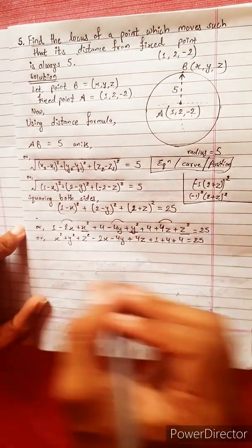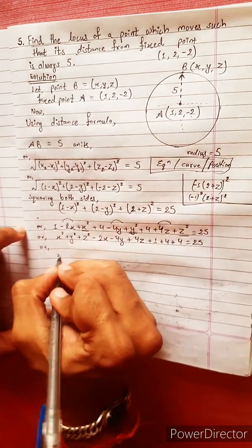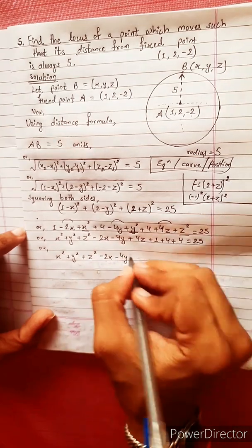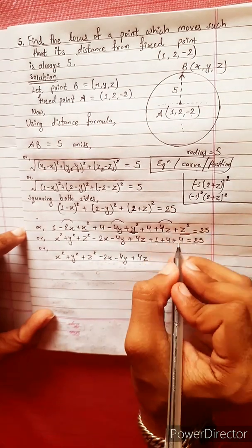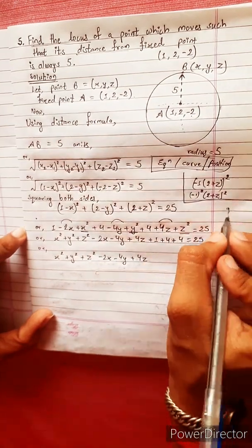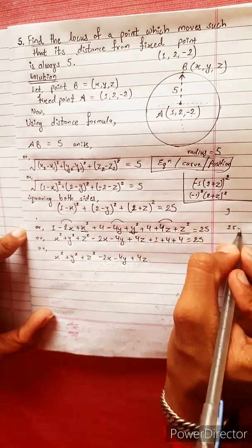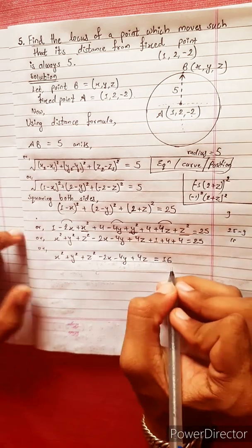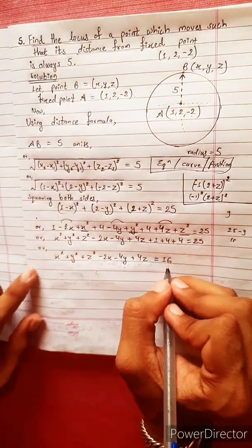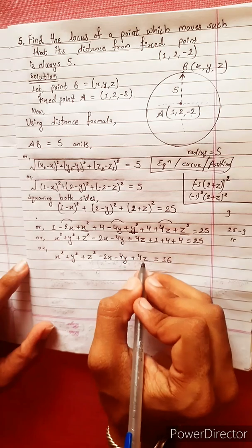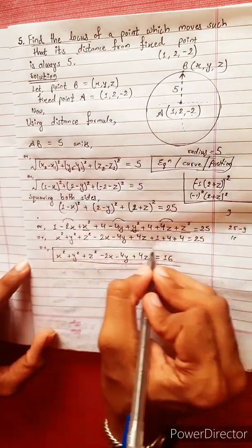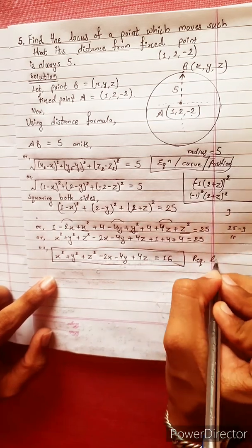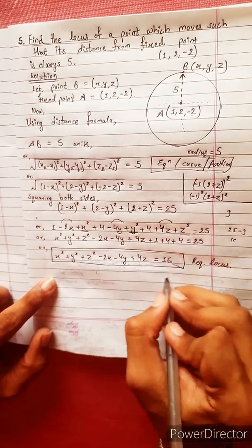So x² + y² + z² - 2x - 4y + 4z. Now 4 plus 4 is 8, and 8 plus 1 is 9. Then 25 minus 9 equals 16. Therefore the required locus is x² + y² + z² - 2x - 4y + 4z - 16 = 0.